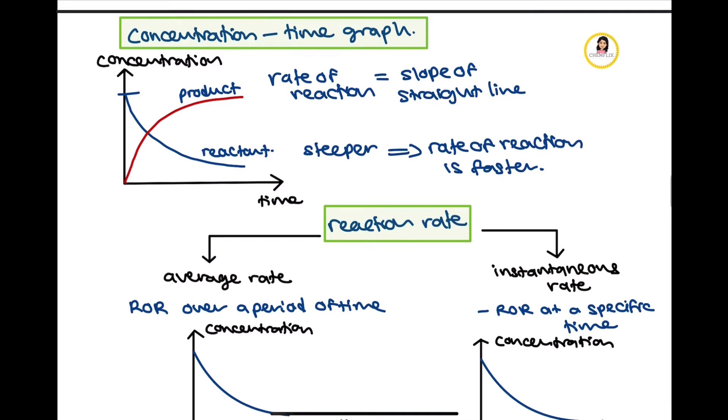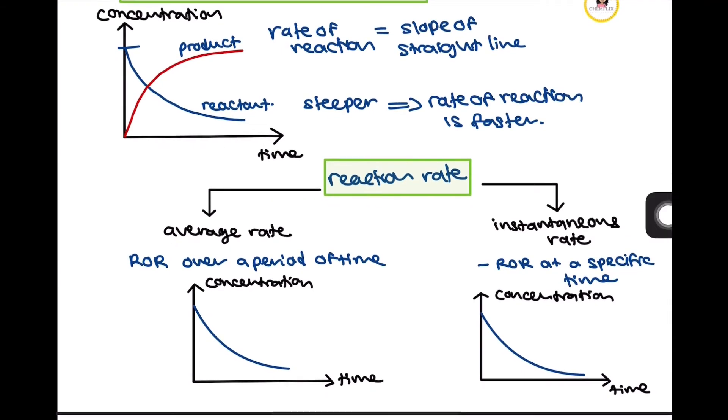To determine reaction rate from a concentration-time graph, there are two rates you should know: the average rate of reaction and instantaneous rate of reaction.